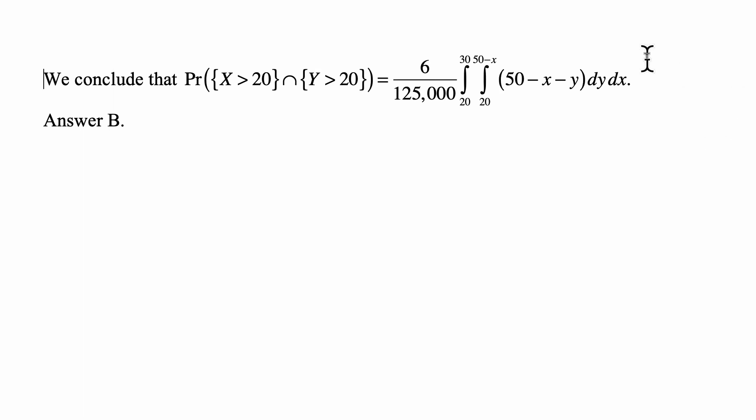We calculate it as the integral that you see here. That's the integral for x going from 20 to 30, and once x is fixed, y goes from 20 to 50 - x. The density is 6 over 125,000 times (50 - x - y). We calculate the integral with respect to y first and then with respect to x.